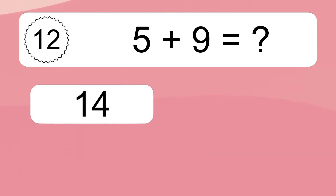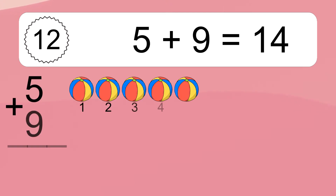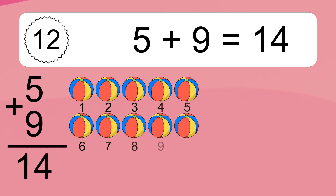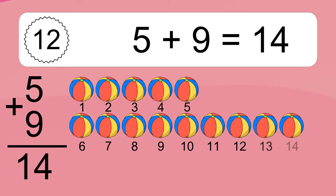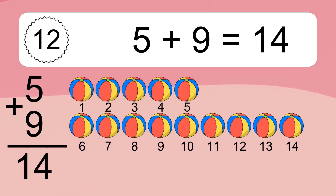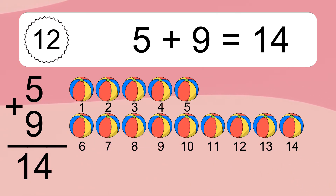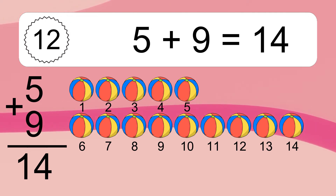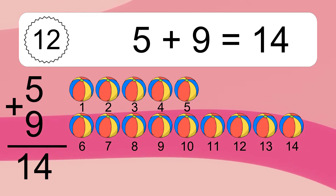5 plus 9 equals what? 5 plus 9 equals 14. Let's count it: 1, 2, 3, 4, 5, 6, 7, 8, 9, 10, 11, 12, 13, 14.